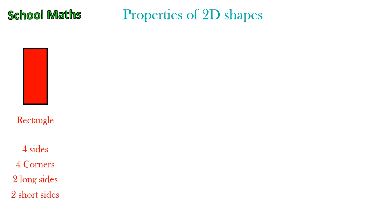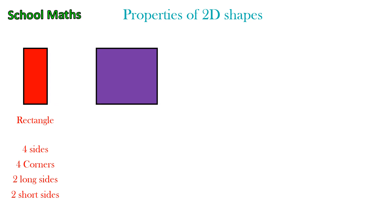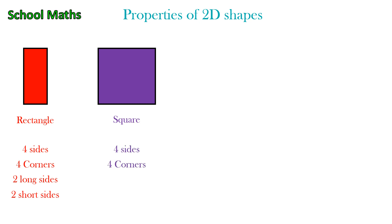The next one is square. This shape has four sides, four corners, four equal length sides.